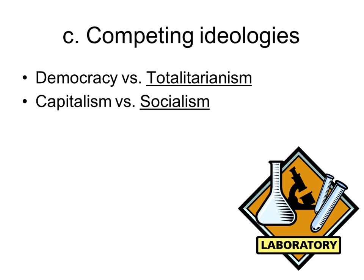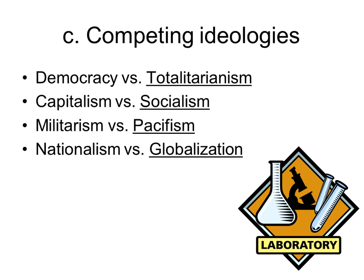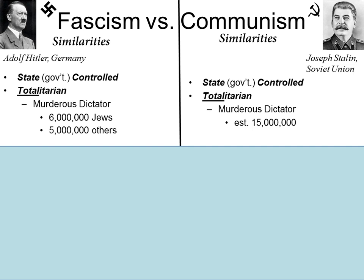We'll see the tension between capitalism and communism continue in the World War Two story. There's also militarism versus pacifism — already discussed with the death effect. Nationalism versus globalization comes to the forefront when organizations like the League of Nations are created, tying nations together rather than standing separately as single nations. We see a tension of sovereignty between a global design and a national design. Communism versus fascism is going to be a huge clash in the years between the wars.